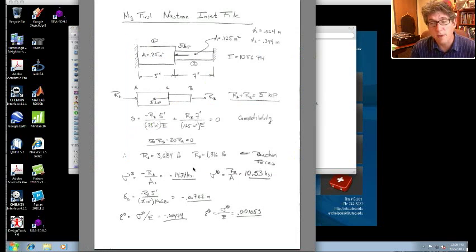The problems in this class are simple enough that almost all of them have exact solutions. So here is just the mechanics of materials type of solution for this problem. So it's just a statically indeterminate problem. So we have reaction forces at A and B. They sum to equal the 5-kip force, but it's statically indeterminate. You have two unknowns, one equation of equilibrium.